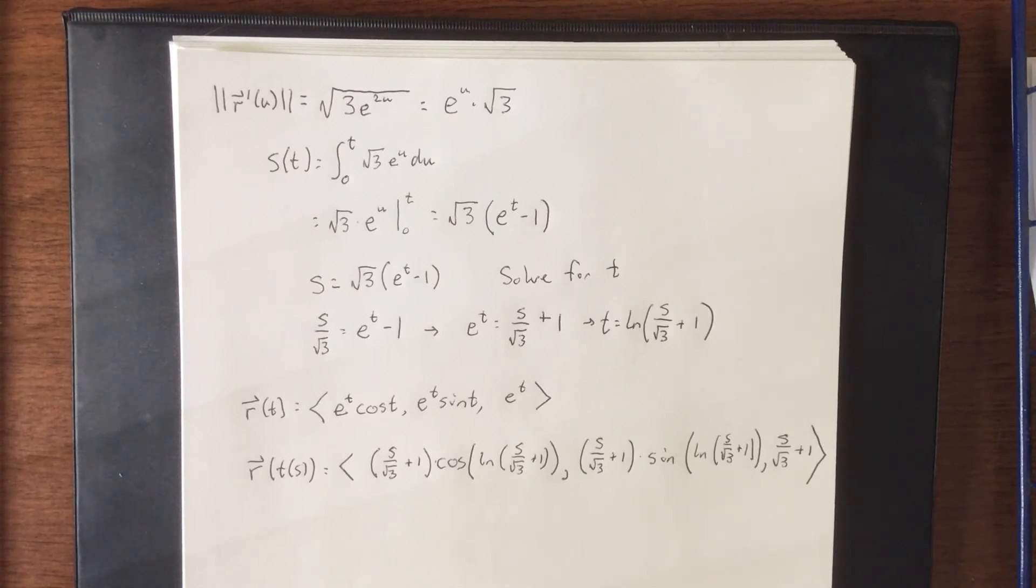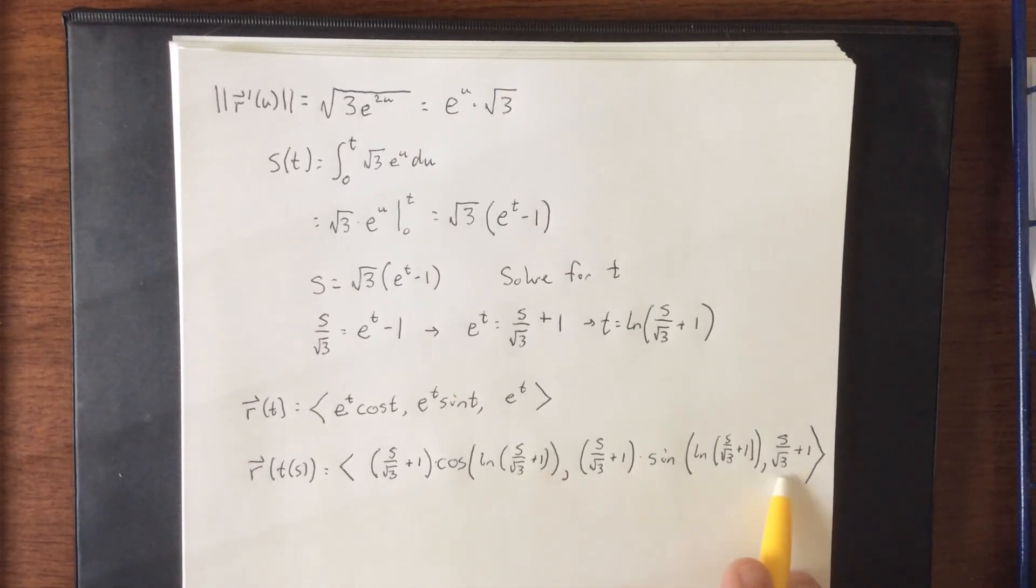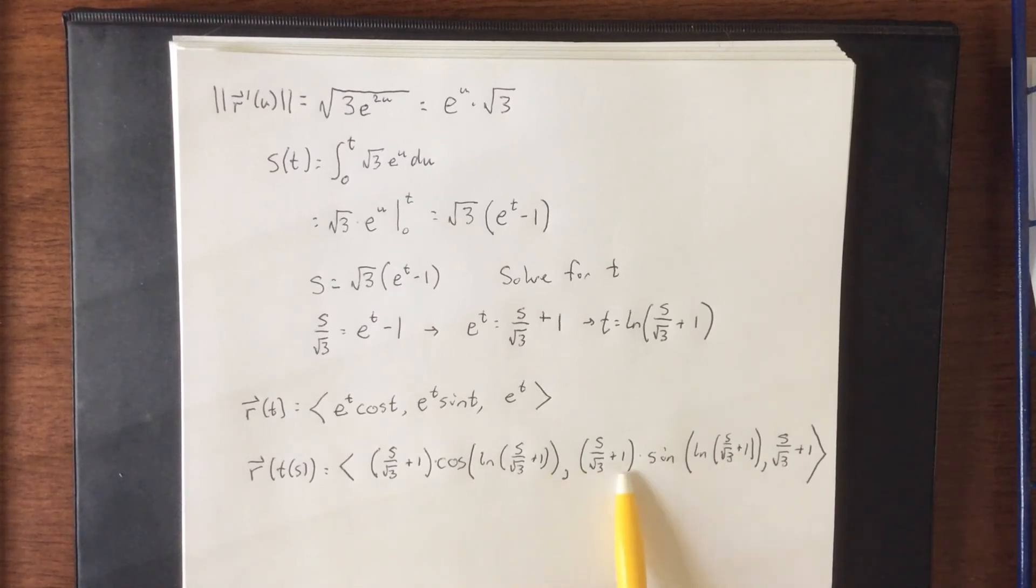So for example, if I wanted to travel one unit, I could plug in s equals one, and this would tell me exactly where I would be in space. If I wanted to travel e units for some reason, I'd plug in s equals e, and this would let me know exactly where I am after having traveled e units.